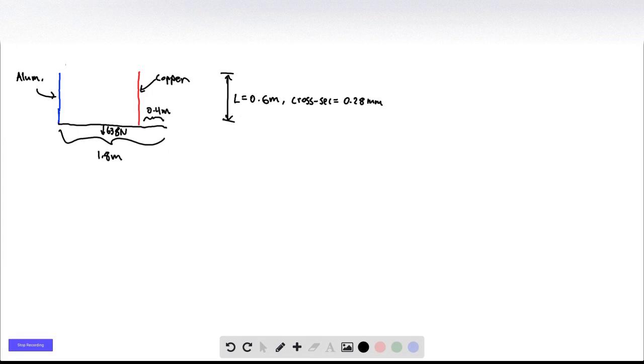And so the aluminum wire is affixed to the left end of the bar. And the copper wire has a little bit of space from the right end. So it's 0.4 meters from the right end of the bar.